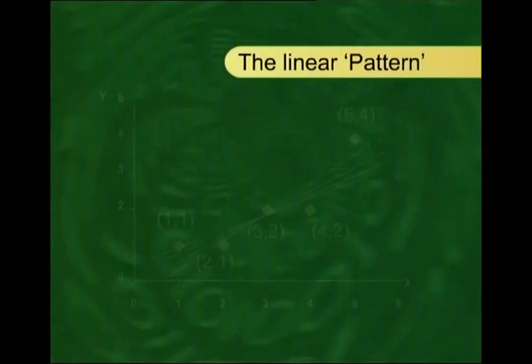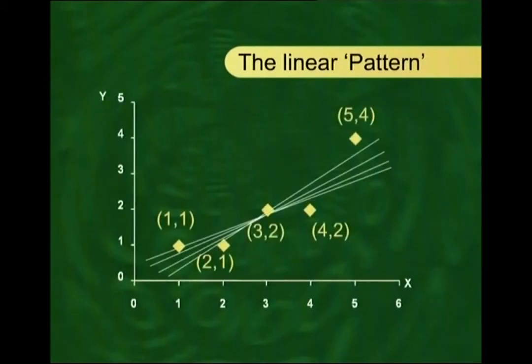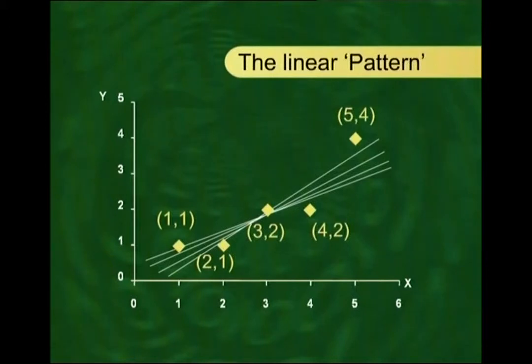Through the same scatter diagram we can have many lines. For the five-point scatter diagram from our example, you can draw one, two, three, or many lines passing through it — and all of them more or less reflect the linear relationship between X and Y. The question then arises: which of these lines should we select as the one that best represents this particular dataset? For this purpose, we use a method called the method of least squares, and the line obtained by this method is called the regression line of Y on X.